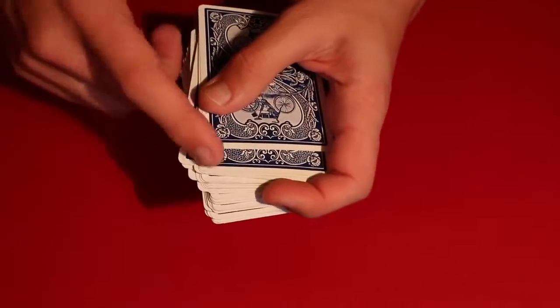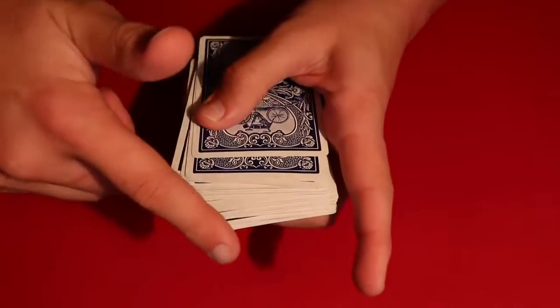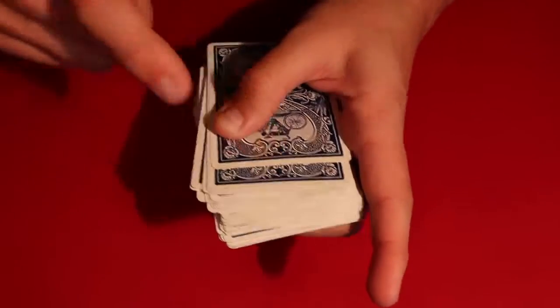And then what you do, you can continue to overhand shuffle the cards to make it look like the cards are kind of leaning in this direction, that way they can't see from the top that you actually have this out-jog card right here.